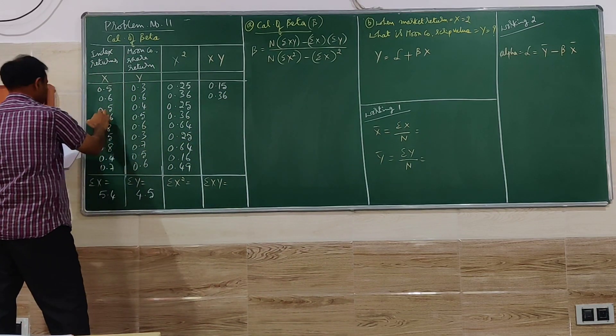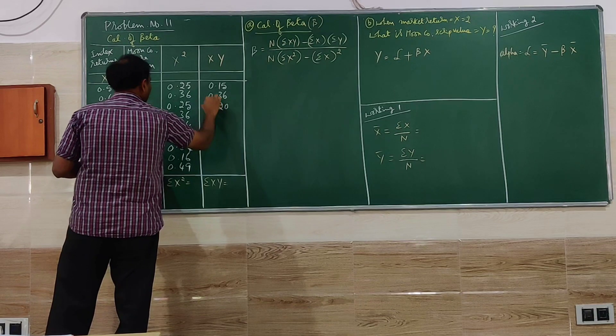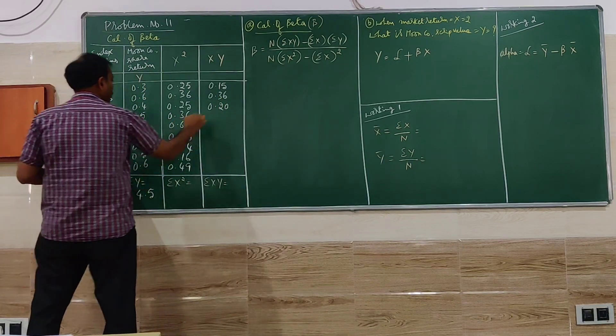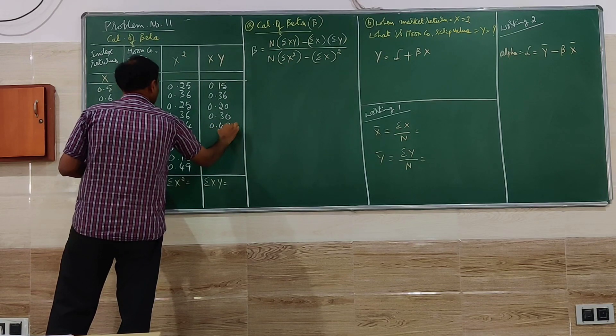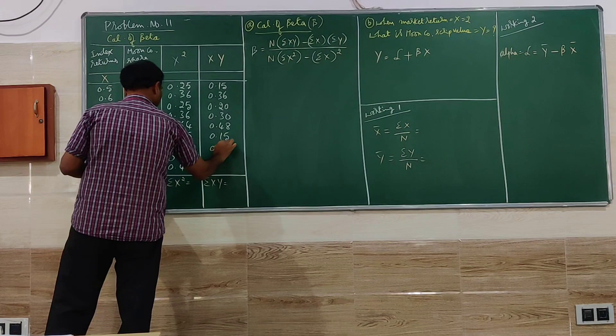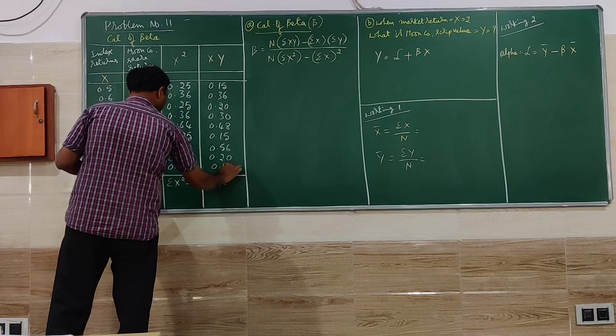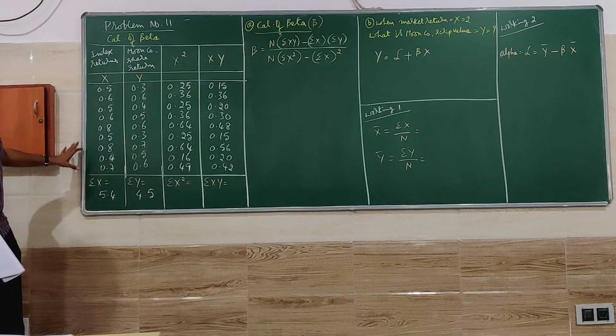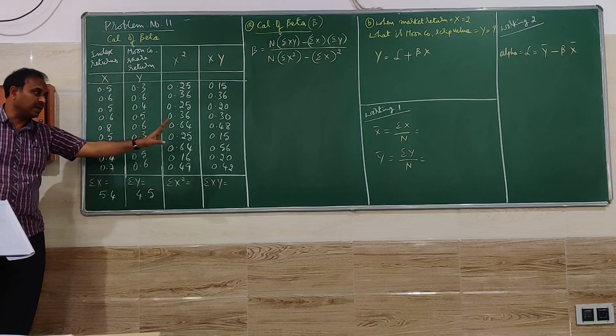0.5 into 0.4 is 0.20, like that. If you go on, we will get the values like what I am writing here. We have to be very careful because it is in the points when you are multiplying.